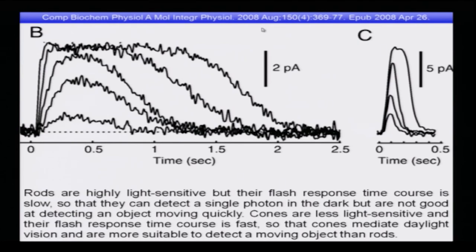Moving on to the different kinds of currents being measured — rods are highly sensitive. From Comparative Biochemistry and Physiology Part A, Molecular and Integrative Physiology, 2008, please go through this. Rods are highly light-sensitive, but their flash response time course is slow, so they can detect a single photon in the dark but are not good at detecting quickly moving objects. Cones are less light-sensitive and their flash response time course is fast, so cones mediate daylight vision and are more suitable to detect moving objects than rods.